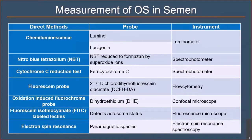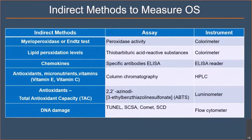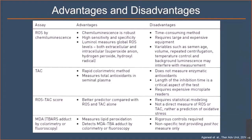Oxidative stress can be measured by direct methods such as chemiluminescence, nitroblue tetrazolium, cytochrome C, and oxidation-induced fluorochrome probes. It can also be measured by indirect tests such as the myeloperoxidase test (also known as the ENDTZ test), measuring lipid peroxidation levels, chemokines, antioxidants and total antioxidants, and also DNA fragmentation using four commonly used methods. Each test has its own advantages and disadvantages. For example, ROS measurement by chemiluminescence is a robust, highly sensitive and specific test; luminol can measure global ROS levels, but it is time consuming and requires large and expensive equipment.